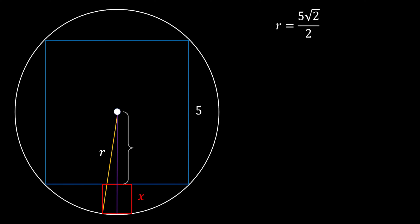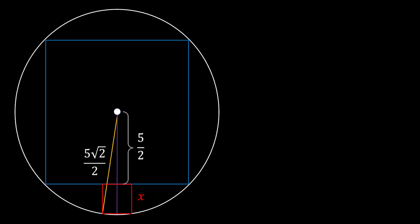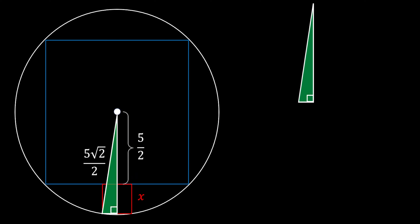Let's mark the side of our red square as x. The distance between the center of the circle and the bottom side of the big blue square equals half the side of the big square, which is 5 over 2. We also replace R with 5√2 over 2. We now have a green right triangle — let's isolate it. Its hypotenuse is 5√2 over 2, the vertical leg is x plus 5 over 2, and the horizontal leg is x over 2.